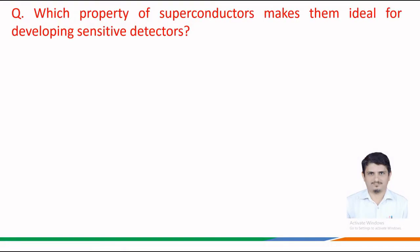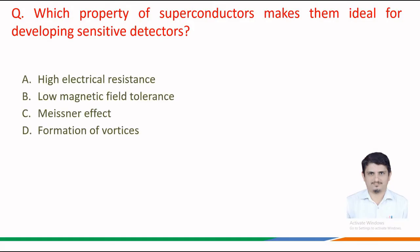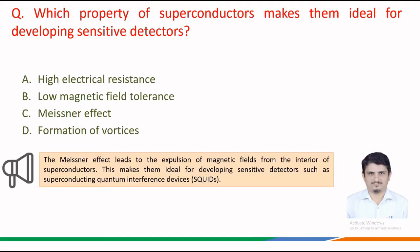Next question: which property of superconductors makes them ideal for developing sensitive detectors? The given options are: option a, high electrical resistance; option b, low magnetic field tolerance; option c, Meissner effect; and option d, formation of vortices.